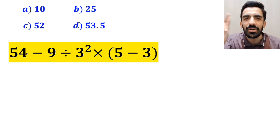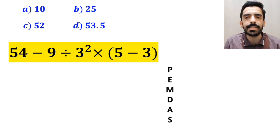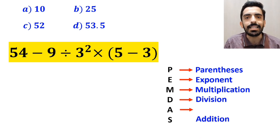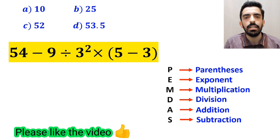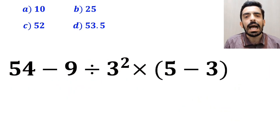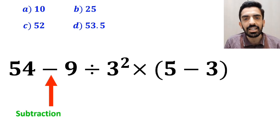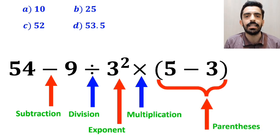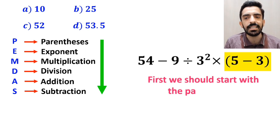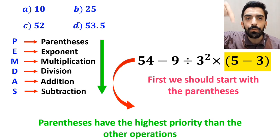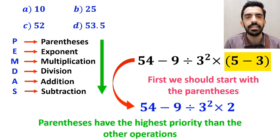Now, let me show you how to solve this expression correctly. To solve this problem, we must follow the PEMDAS rule. In this expression, first we have a subtraction sign, then a division sign, and after that we have an exponent, then a multiplication, and finally parentheses. According to the PEMDAS rule, first we should start with the parentheses, because parentheses have the highest priority. So we can write this expression as 54 minus 9 divided by 3 squared, then times 2.